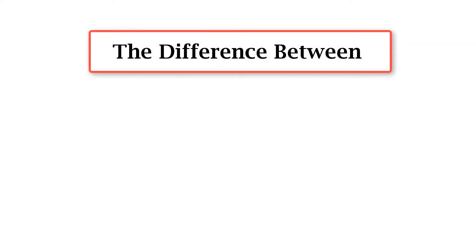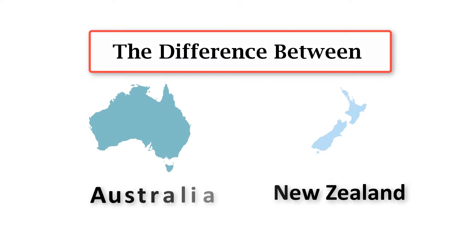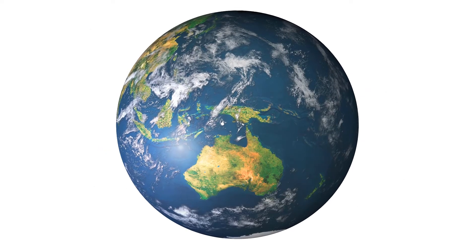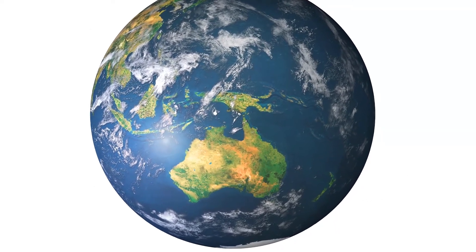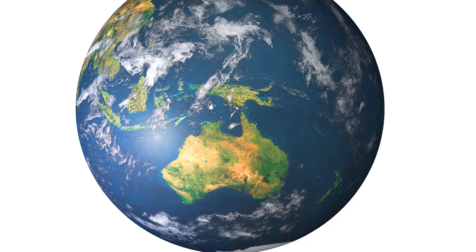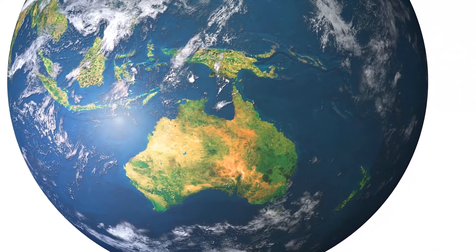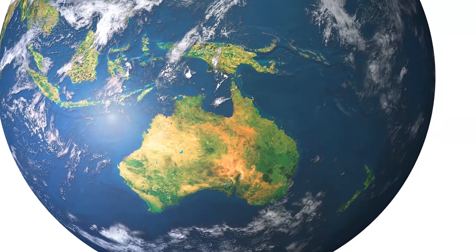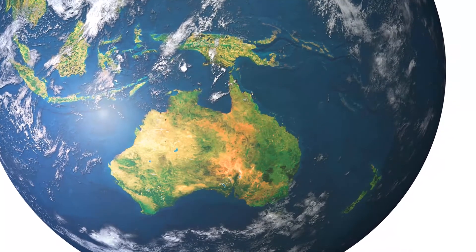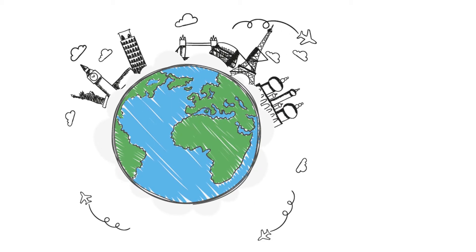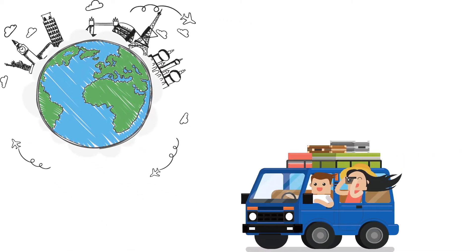In today's episode we will show you the difference between Australia and New Zealand. Australia and New Zealand are two former English colonies located in the southern hemisphere. Both countries are part of the Asian continent and their geographic proximity translates in some similar cultural and physical features, yet at the same time Australia and New Zealand are very different countries.